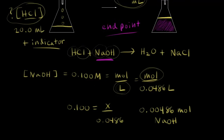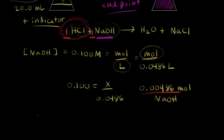Next, look at the balanced equation: HCl plus NaOH gives H2O plus NaCl. There's a coefficient of one here and one here, so we have a one-to-one mole ratio. The equivalence point is where just enough standard solution has been added to completely react with the solution being titrated — all of the acid has been neutralized. Since we have a one-to-one mole ratio, we must have had 0.00486 moles of HCl present in the original solution.